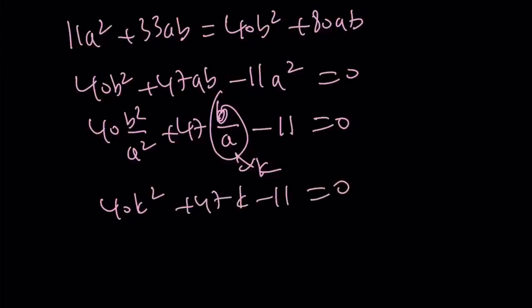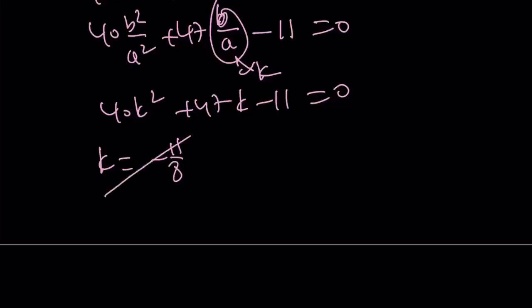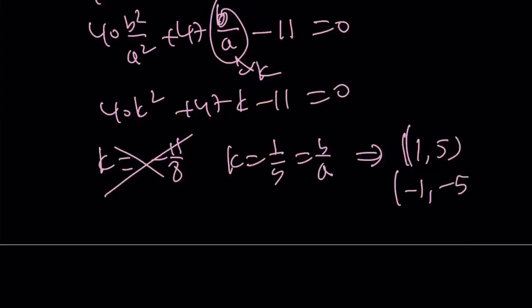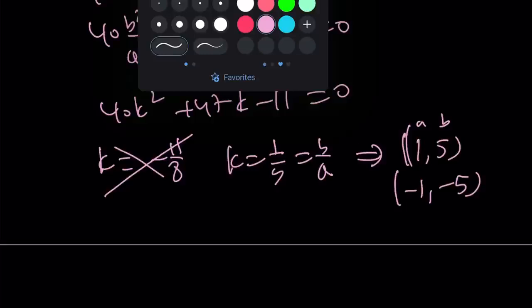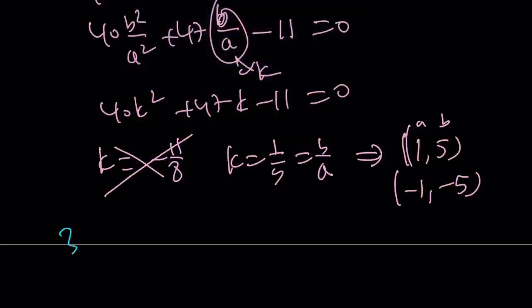From here, you get k equals negative 11 over 8, which doesn't give you real solutions. k equals 1 fifth, which is b over a, gives you 1 comma 5 and negative 1 comma negative 5. By the way, this is a and this is b, as before. Let's talk about the third method without further ado, and we'll finish up with the graph.